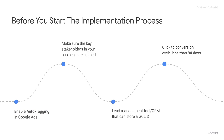Finally, the click-to-conversion cycle needs to be less than 90 days, because the Google Click ID expires after this 90-day period. Does this mean that if you're an enterprise software solution with a six to nine month sales cycle you won't be able to use offline conversion tracking? No — you just need to find another point within the buying process that makes sense for your business.